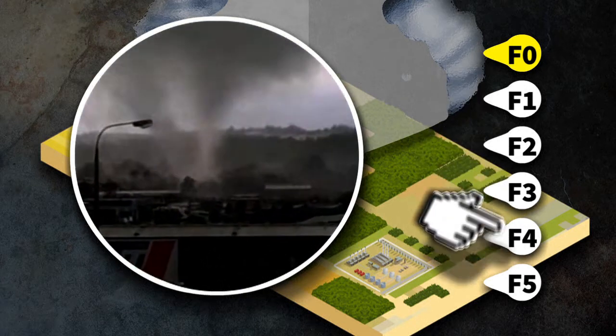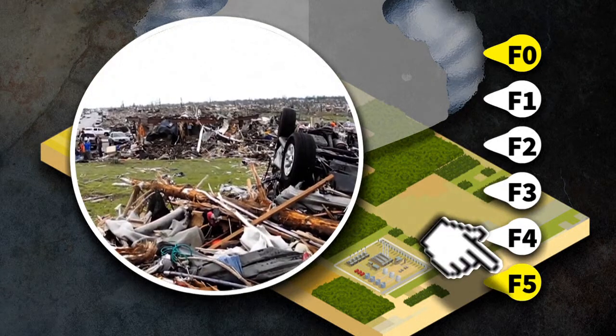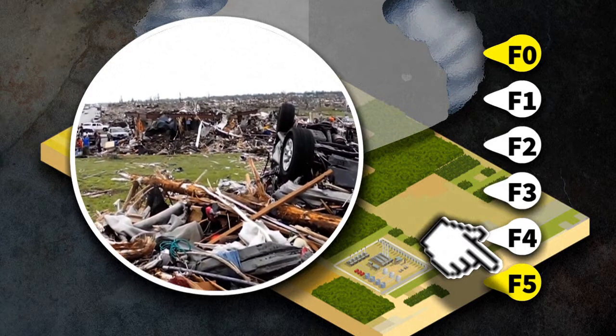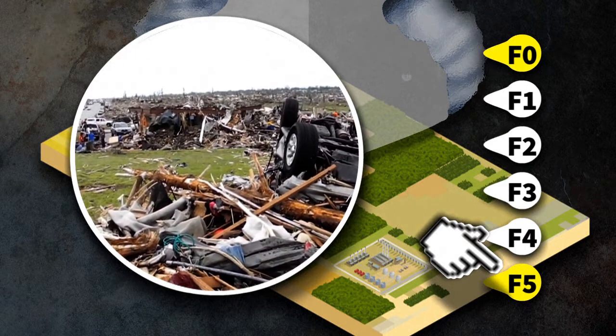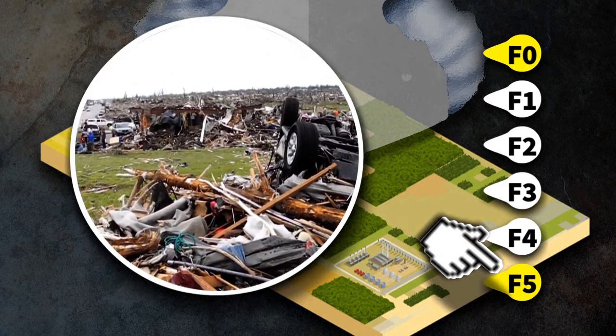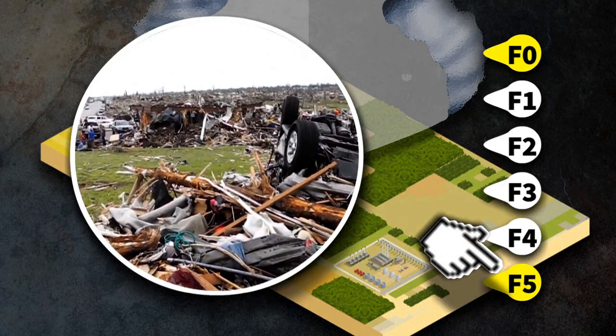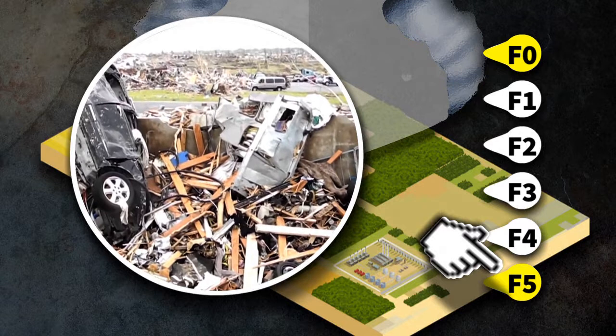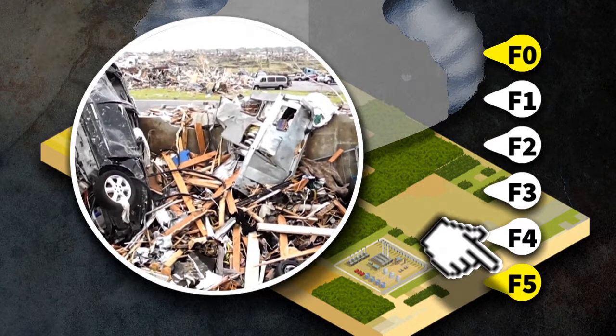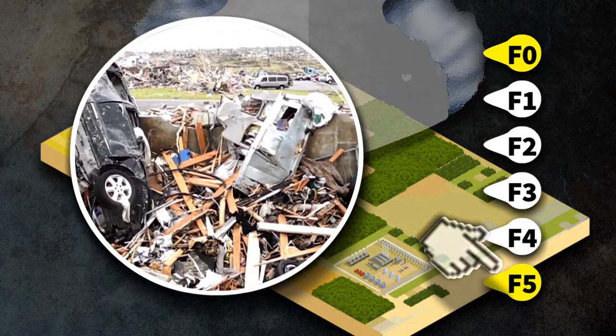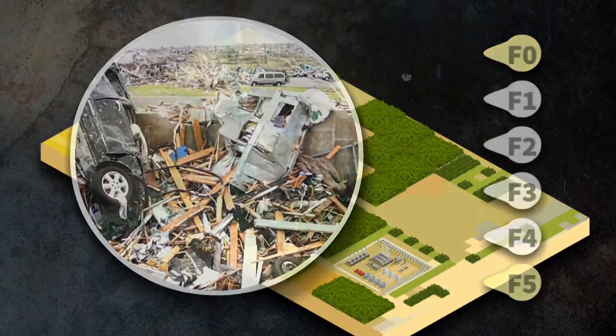Level 5 tornadoes, however, bring with them winds ranging from 320 to 500 km per hour. In this case, whole houses can be uprooted and cars thrown more than 100 metres.